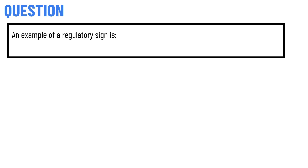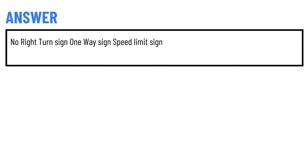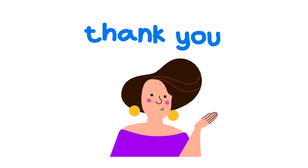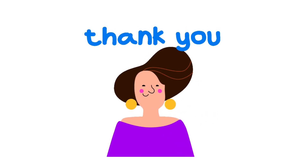Our today's question is: an example of a regulatory sign. The correct answers are: no right turn sign, one way sign, and speed limit sign. So that's the correct answer of the question.